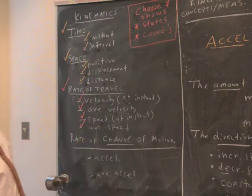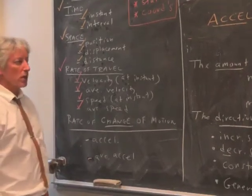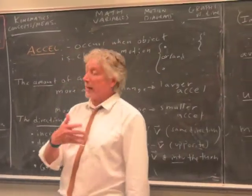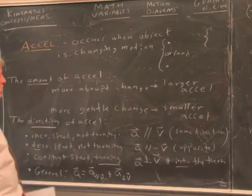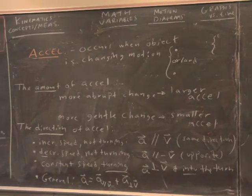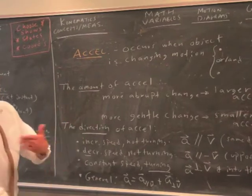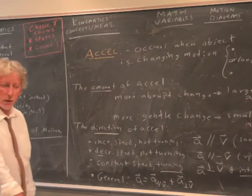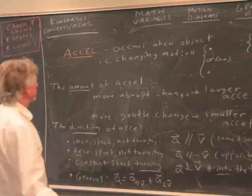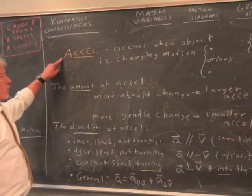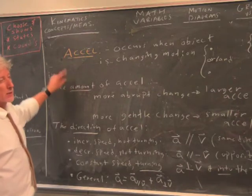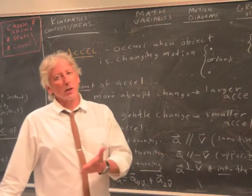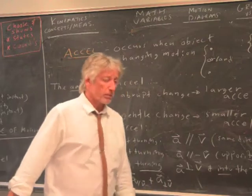Now let's talk about rate of change of motion — acceleration, average acceleration. These are concepts that are quite confusing. People confuse them all the time initially. You can get them straight if you're careful — by looking at notes and working problems. So we just have to jump in, lay it out, and do it, and keep a constant vigil. Try to keep it straight and challenge yourself.